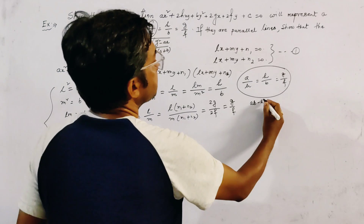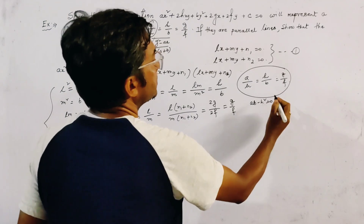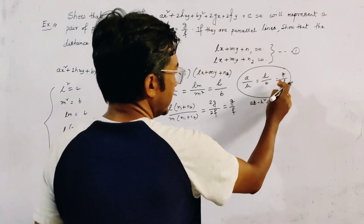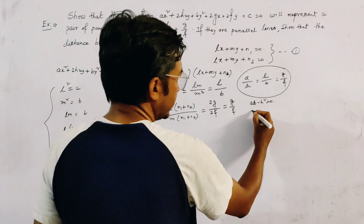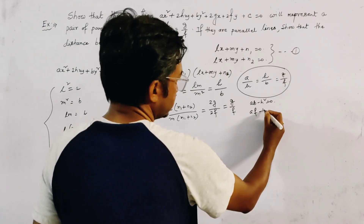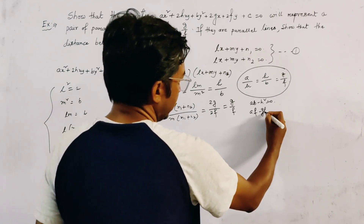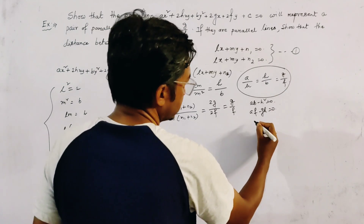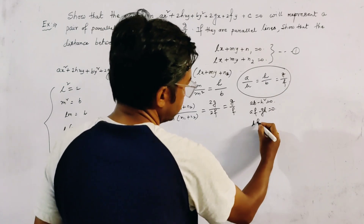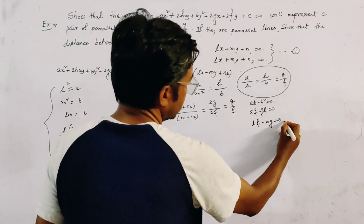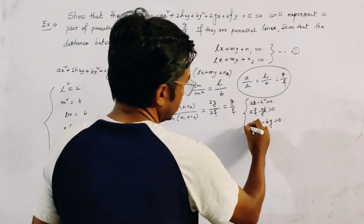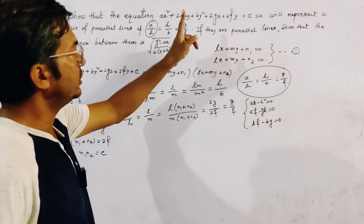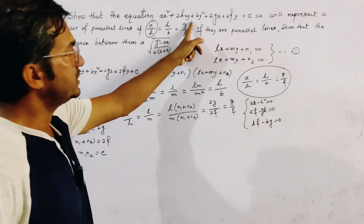This condition can be written as three equivalent conditions: AB − H² = 0 from the first two ratios; AF − GH = 0 from the first and last ratios; and HF − BG = 0 from the second and third ratios. These are all the conditions of parallelism for this equation.